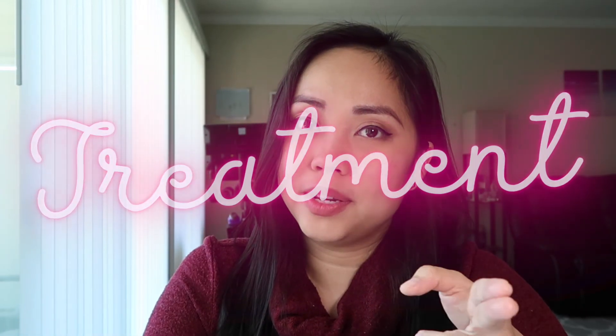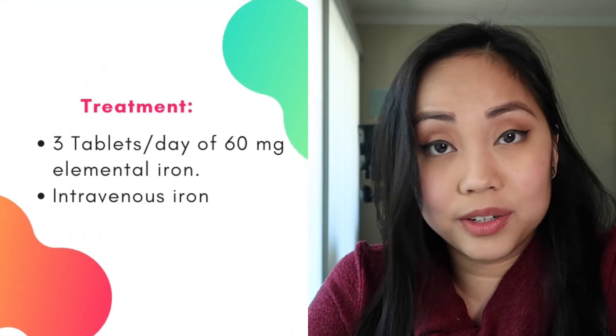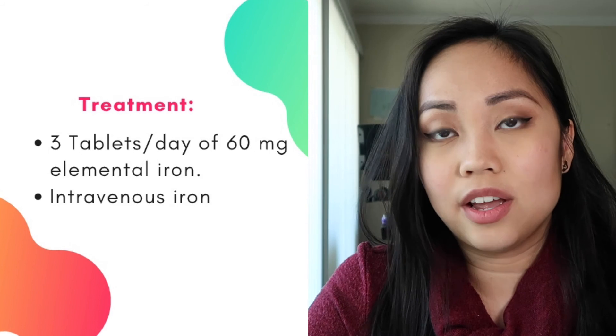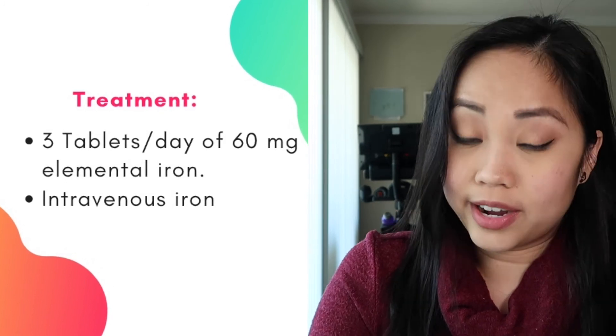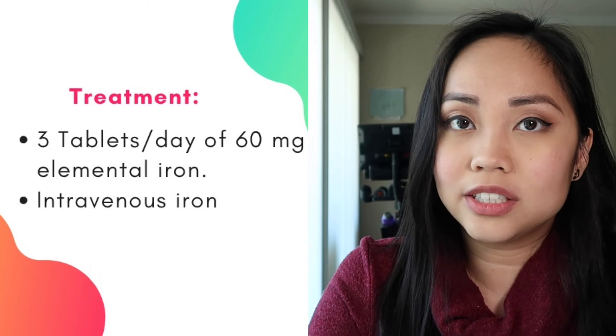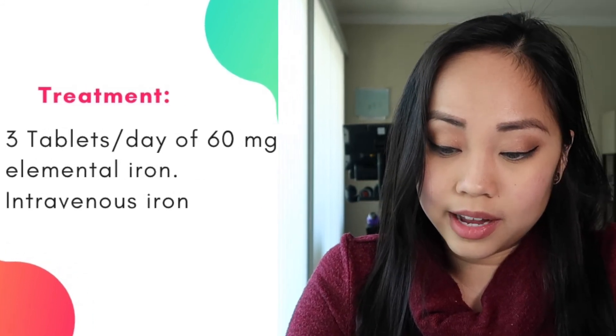For treatment, you have to address what's happening with the patient first — do they need a transfusion already? Is their hemoglobin and hematocrit severely low? Take care of that first. After that, give oral supplements of iron, which is ferrous sulfate — usually three tablets a day of 60 milligrams of elemental iron. There's also an intravenous way of providing iron if the person can't take oral medication. The expectation is that the patient would respond to treatment by producing one gram of hemoglobin per month.